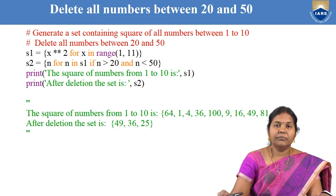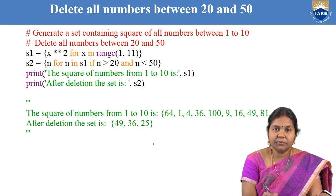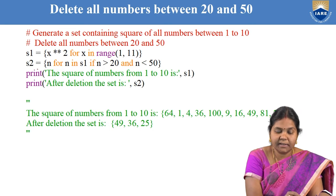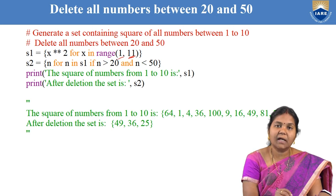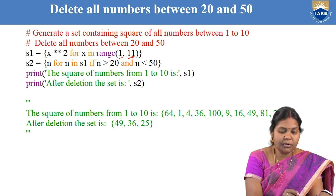Next, let us go for another example where we want to delete all numbers between 20 and 50. I want to generate a set of squares of all numbers from 1 to 10, and then delete the values which are between 20 and 50. First, create set S1 as {x**2 for x in range(1, 11)}, which finds the square of each number from 1 to 10 and stores it in S1.